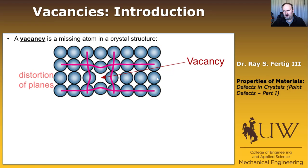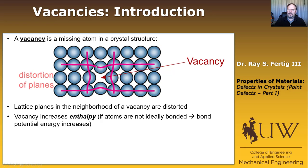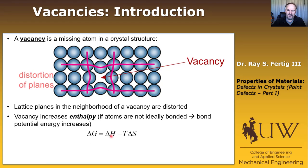When we have a vacancy, the lattice planes get distorted because the bonding changes. That's going to have an effect on energy. If our atoms are not optimally bonded, that increases the energy, so we expect the energy of atoms in the neighborhood of the vacancy to be increased. Adding vacancies increases the enthalpy of the system — that's the delta H term in the Gibbs free energy, which contains all the bond energy potential information. So delta H increases with the number of vacancies.